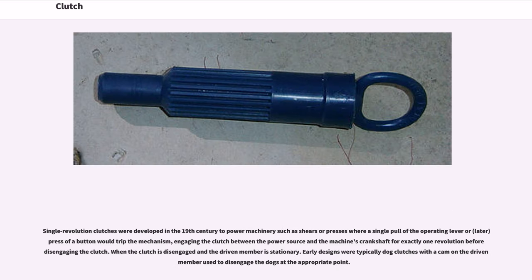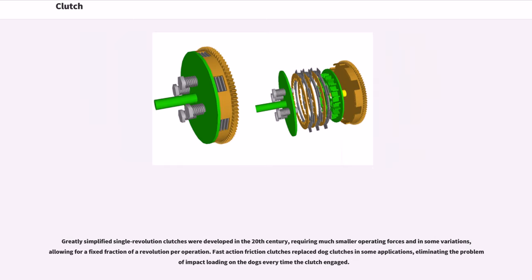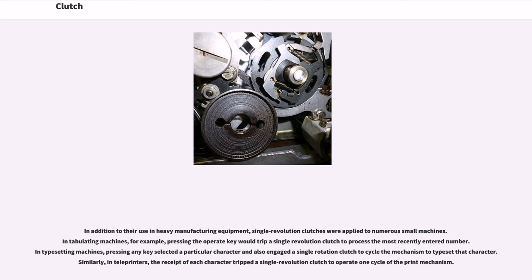Single revolution clutches were developed in the 19th century to power machinery such as shears or presses, where a single pull of the operating lever or press of a button would trip the mechanism, engaging the clutch between the power source and the machine's crankshaft for exactly one revolution before disengaging. Early designs were typically dog clutches with a cam on the driven member used to disengage the dogs at the appropriate point. Greatly simplified single revolution clutches were developed in the 20th century, requiring much smaller operating forces and, in some variations, allowing for a fixed fraction of a revolution per operation.